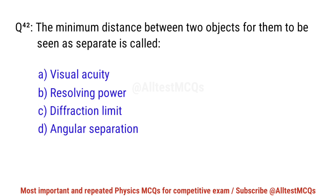Question No. 42. The minimum distance between two objects for them to be seen as separate is called? Correct option is B. Resolving power.